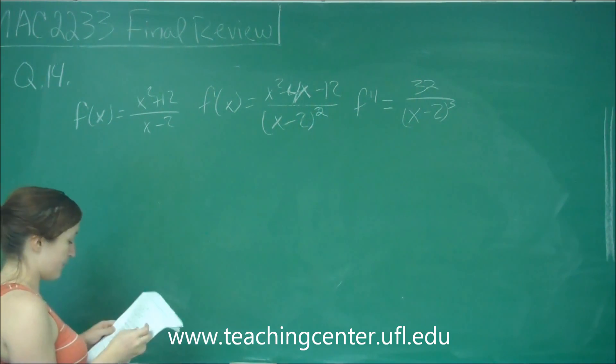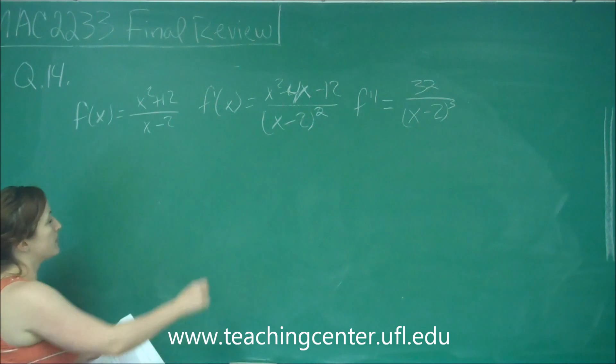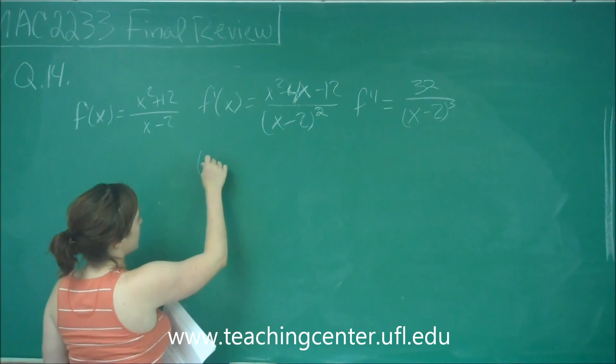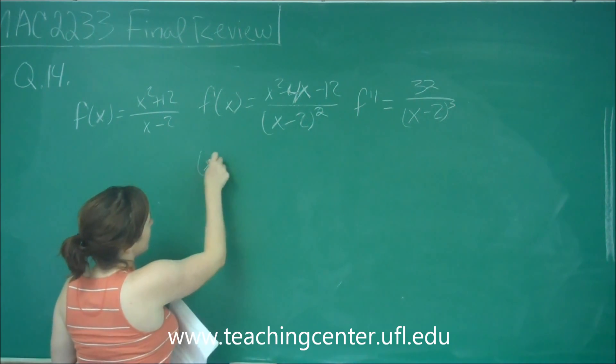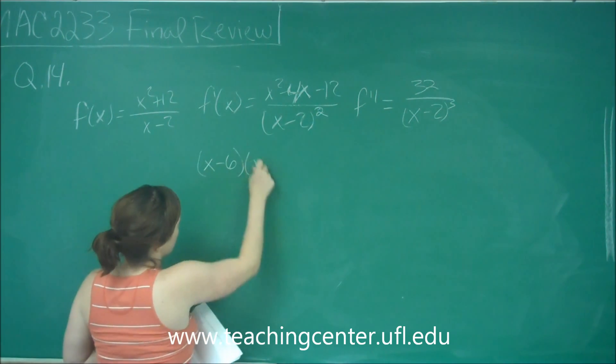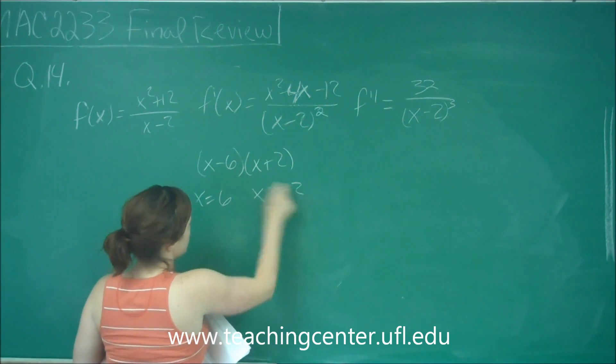The first one says f of x has a relative maximum at x equals negative 2 and a relative minimum at x equals 6. So for the maximum, we'll be dealing with the first derivative, and we'll set the top equal to 0. I can factor out the top and get x minus 6 times x plus 2, giving x equals 6 and x equals negative 2.